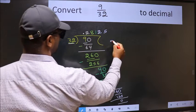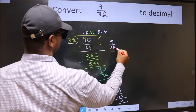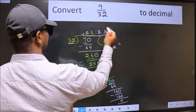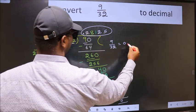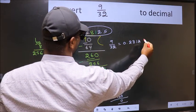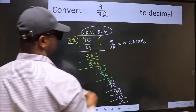Therefore, the decimal of 9 by 32 is this one: 0.28125 is our answer.